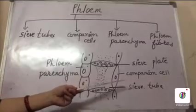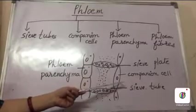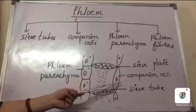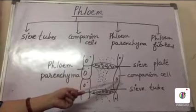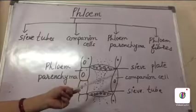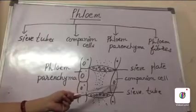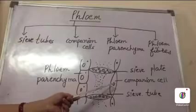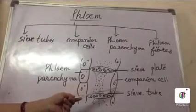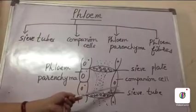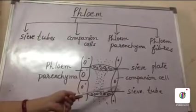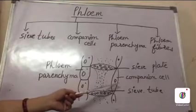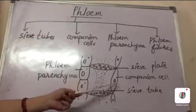Sieve tubes are adjacent to companion cells. These companion cells contain a nucleus. Both the sieve cells and the companion cells are produced from the same mother cells, so together they are considered as a living unit. The companion cells are specialized cells that help in the functioning of sieve cells.